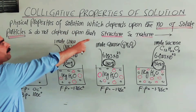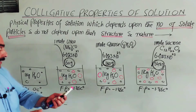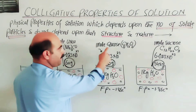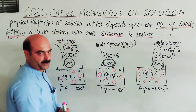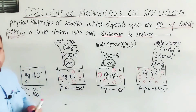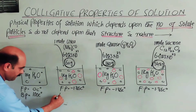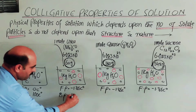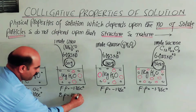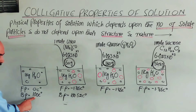These solutions do not depend upon the structure of urea, glucose, or sucrose — that is why these are called colligative properties. The boiling point of the solution is 100.52 degrees C, which is elevated above the pure solvent's boiling point.